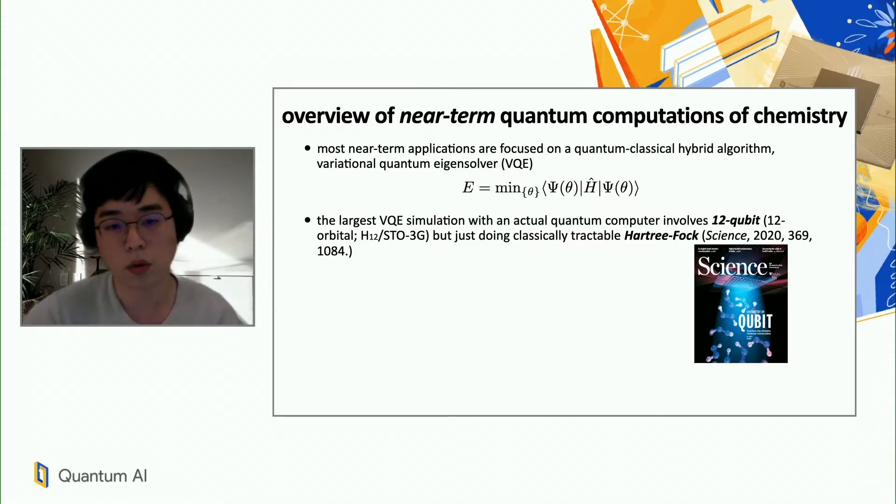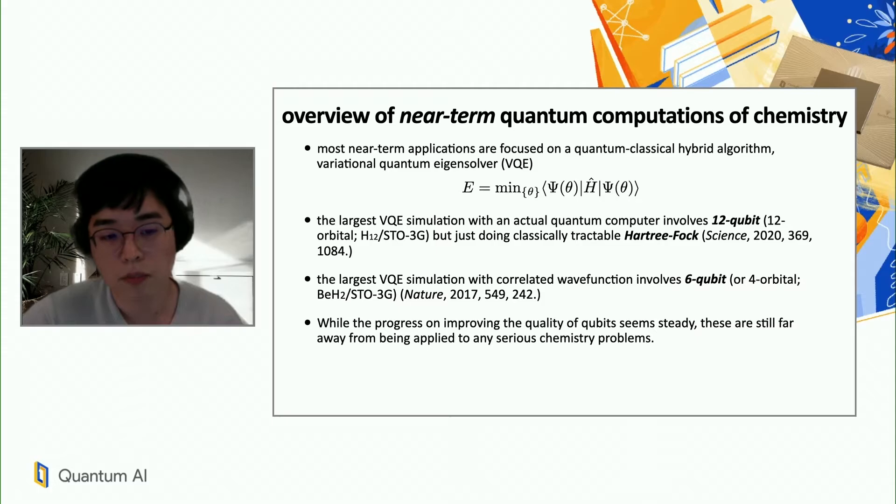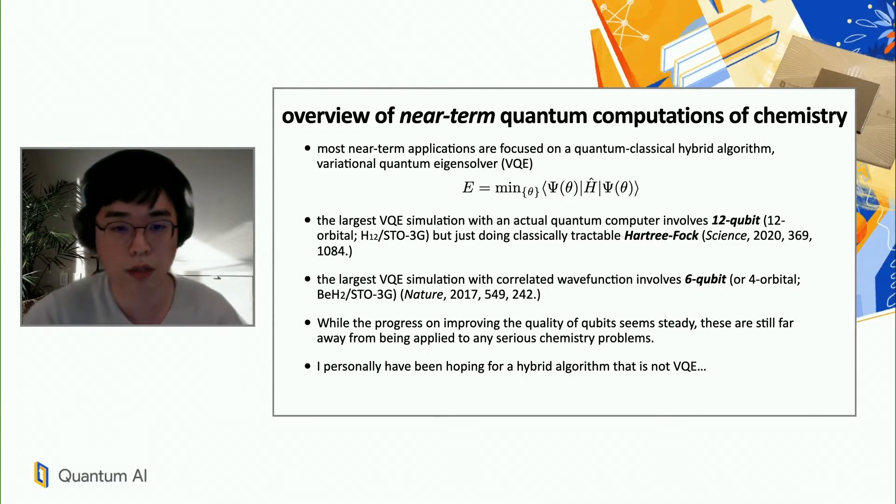Hartree-Fock doesn't actually include any electron correlation in it, so one actually has to include electron correlation for useful quantum chemistry simulation. Once you do that, the largest VQE simulation with electron correlation included had only six qubits total, and this was the work done by IBM several years ago. I believe that the progress on improving the quality of qubits and related device components has been very steady, but these are still very far away from being applied to any serious chemistry problem. So I personally have been hoping for a hybrid algorithm that is not VQE and with potentially more scalability towards something that is practically useful even now.